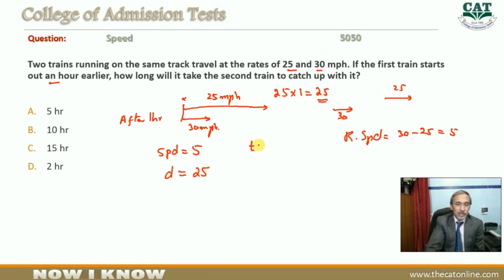Now we can find the time: distance over speed. Distance over speed equals 25 over 5, and this equals 5. So 5 hours after, the trains will meet.